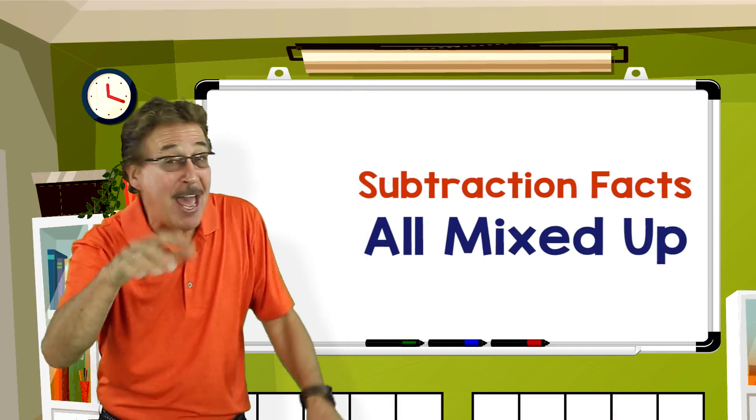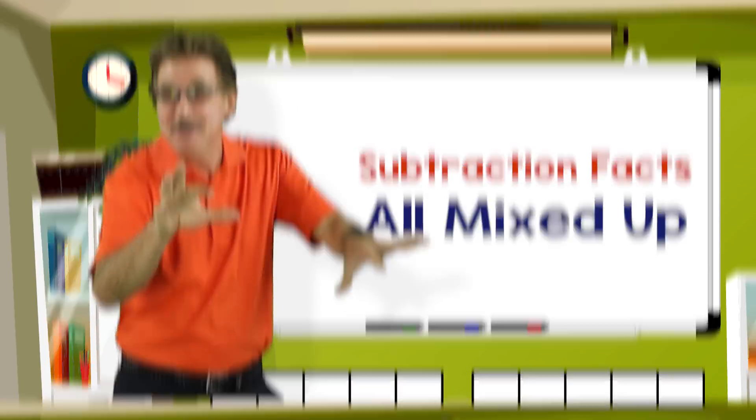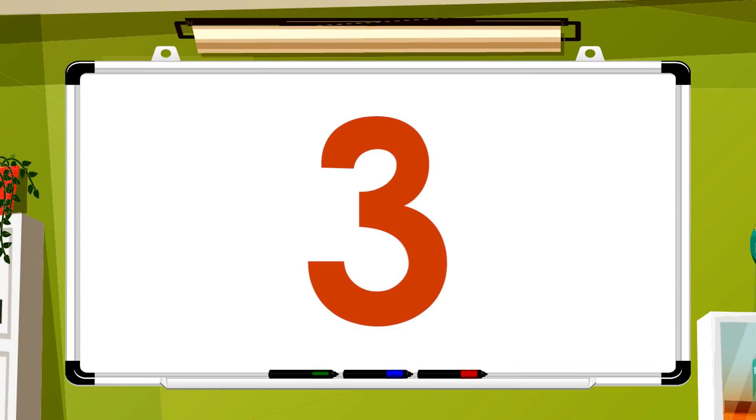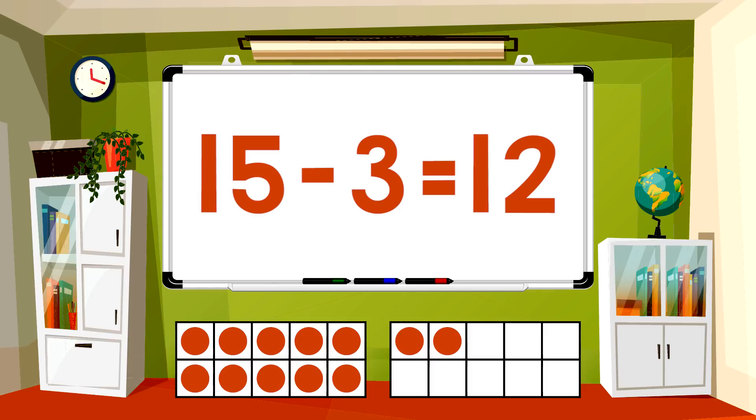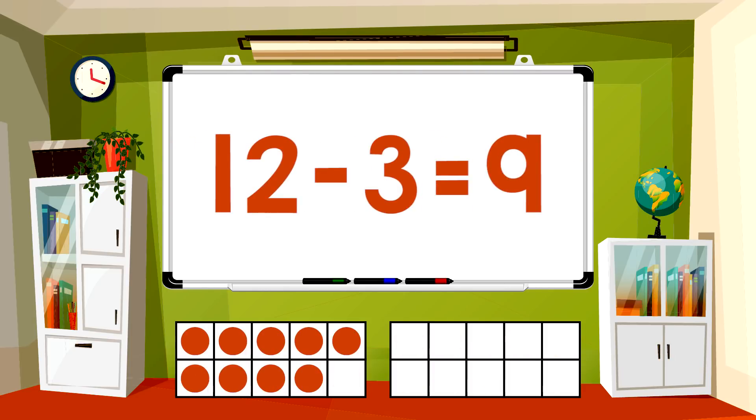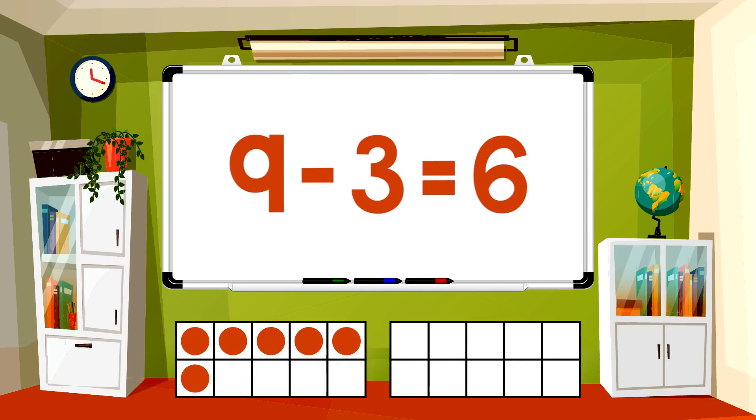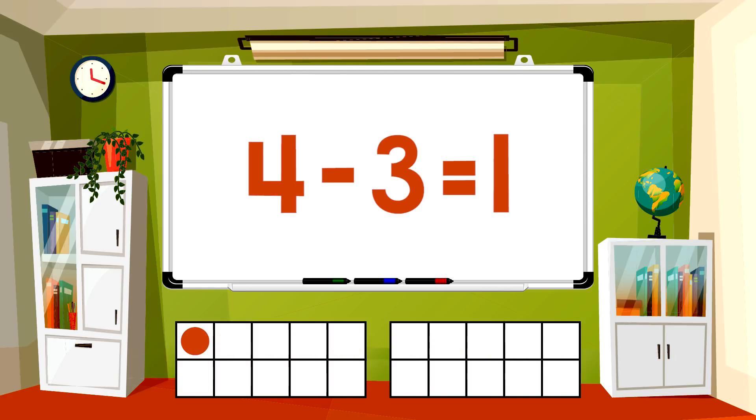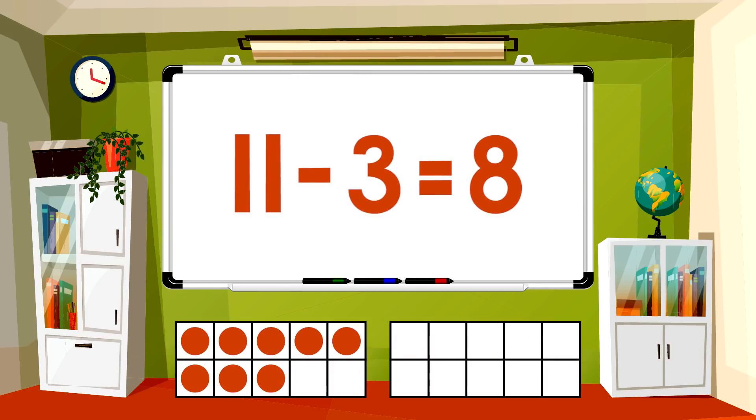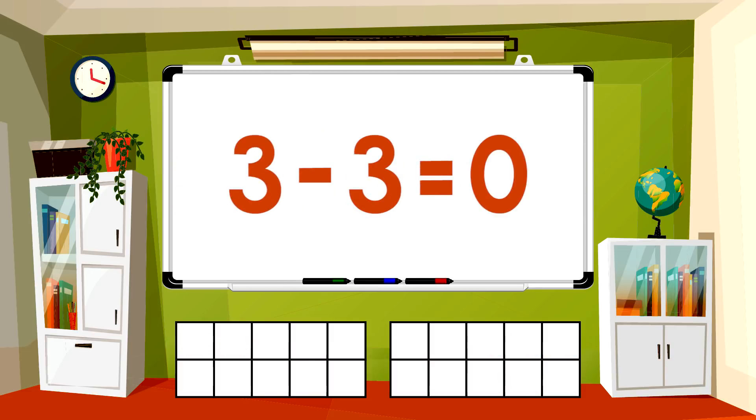Let's learn our subtraction facts all mixed up. Subtract 3 from each number. 10-3 equals 7, 15-3 equals 12, 12-3 equals 9, 9-3 equals 6, 4-3 equals 1, 11-3 equals 8, 3-3 equals